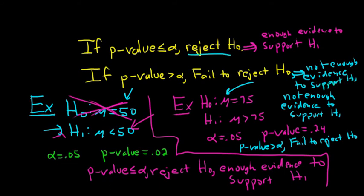So when you reject H₀, there is enough evidence to support H₁. When you fail to reject H₀, there is not enough evidence to support H₁.